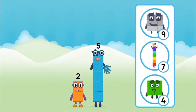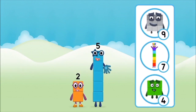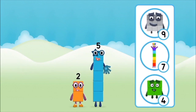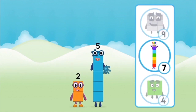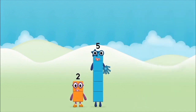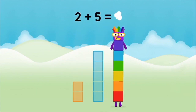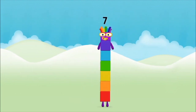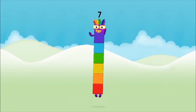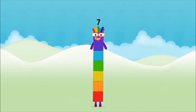What number block will you make when you add these two number blocks together? That's right! Now add the number blocks together. Five, two, two plus five equals seven! Amazing! You made number block seven!